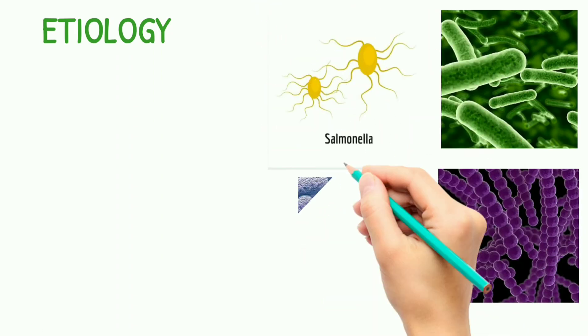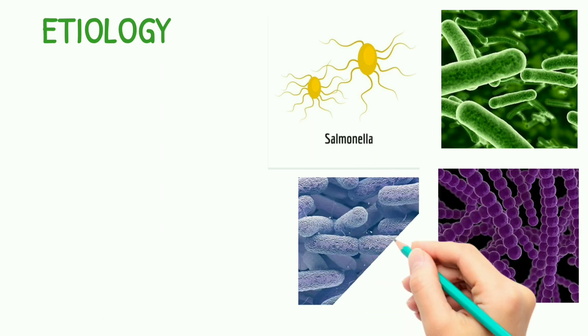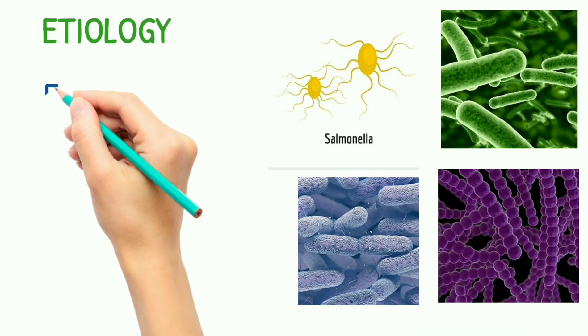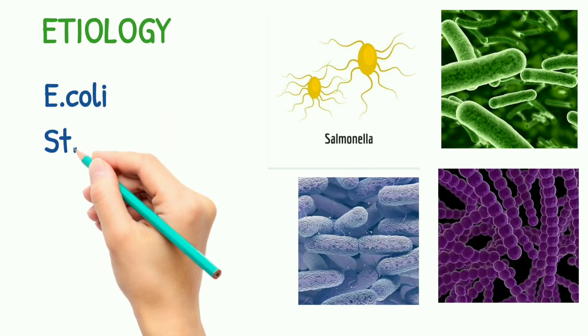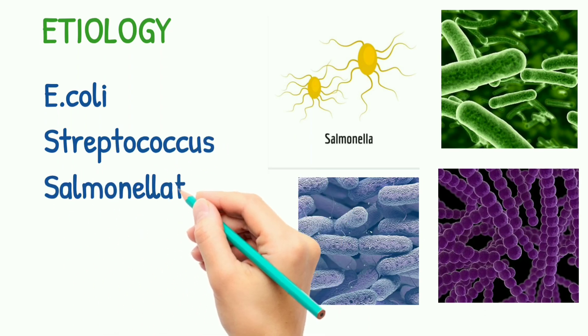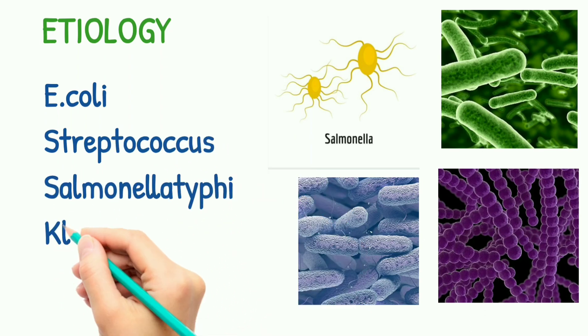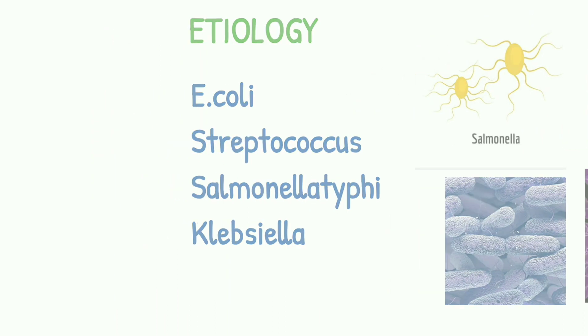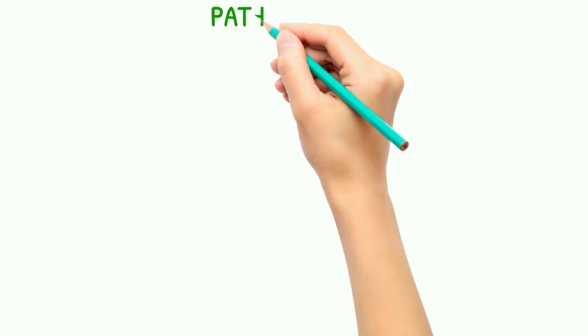The etiology of cholecystitis includes: first, E. coli; second, Streptococcus; third, Salmonella typhi; and fourth, Klebsiella.